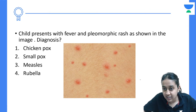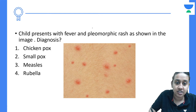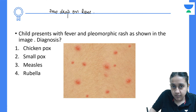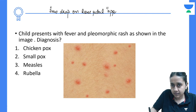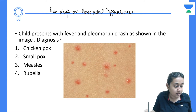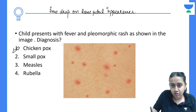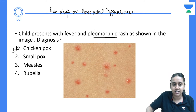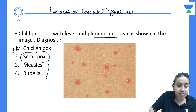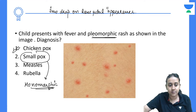A child with fever and pleomorphic rash — this appearance is known as 'dew drop on rose petal' appearance, a very classical rash of chickenpox. Pleomorphic is a very classical feature of chickenpox. In smallpox, the lesions are monomorphic.